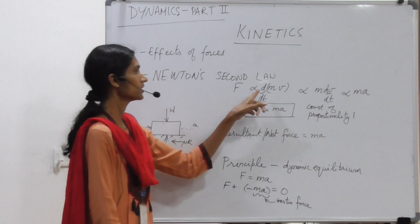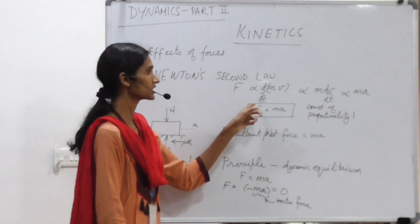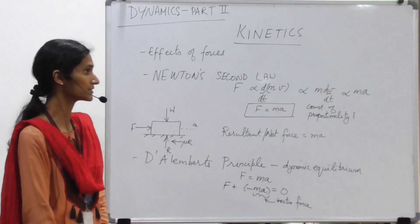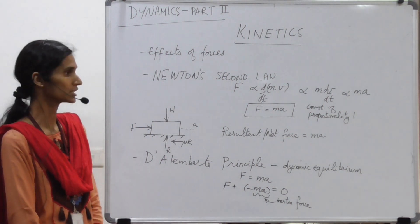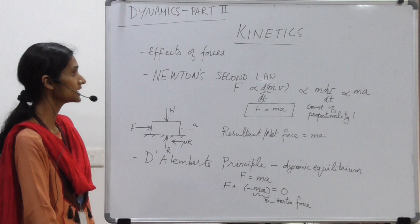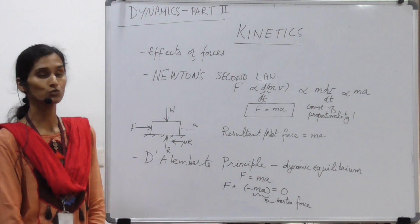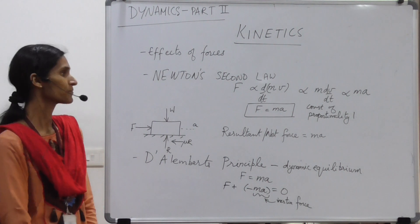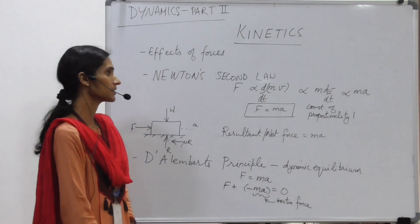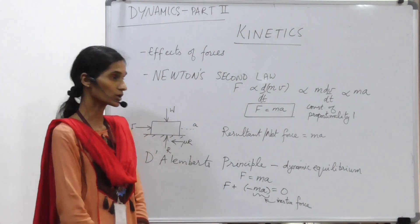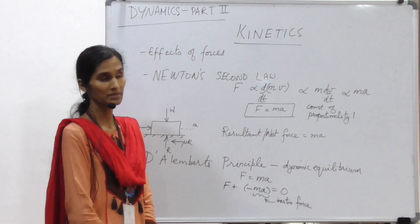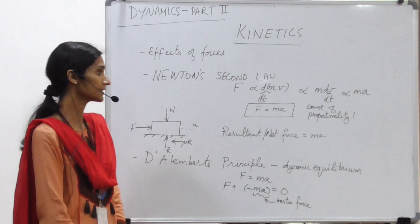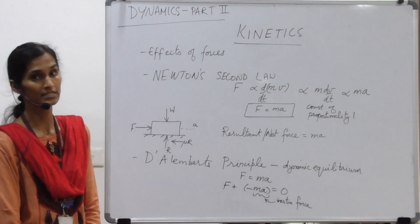By taking the rate of change into the equation, we find it becomes mass into dv by dt which is simply acceleration. So in effect, force is directly proportional to mass into acceleration in the direction of the force. This equation is now brought down to F equals ma by putting the constant of proportionality as 1 and choosing the unit of force in such a way.